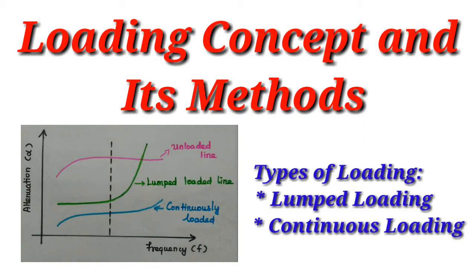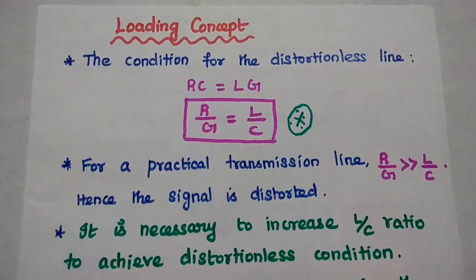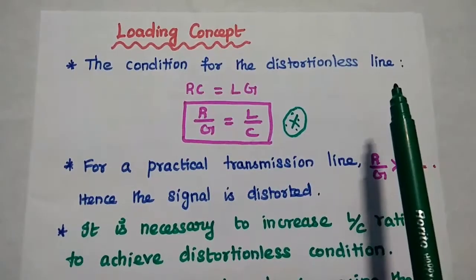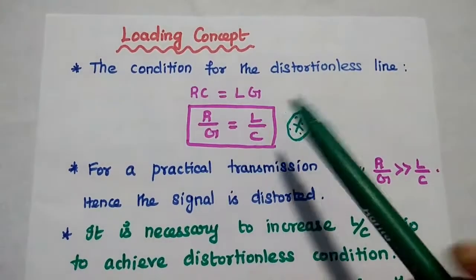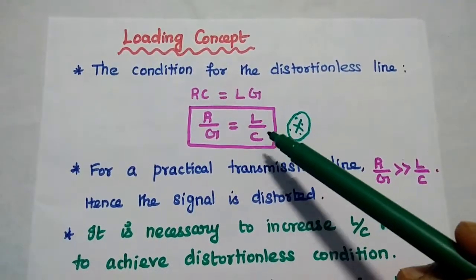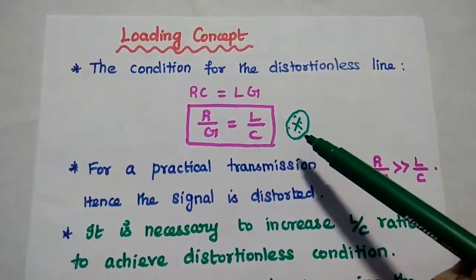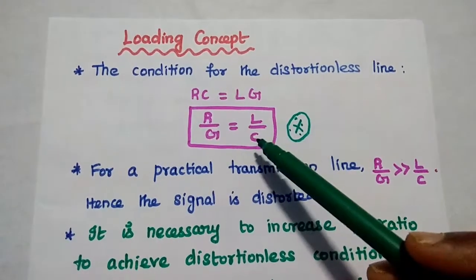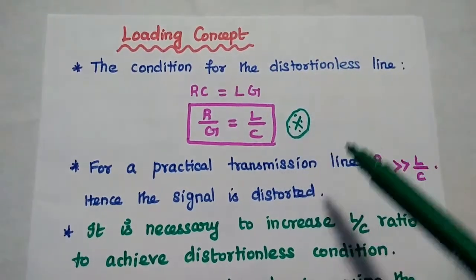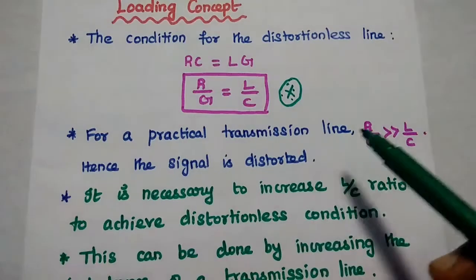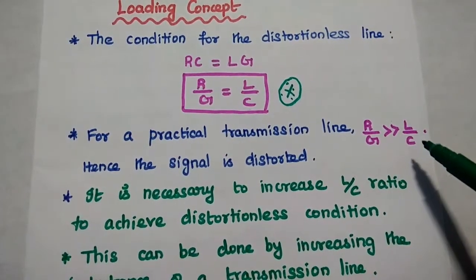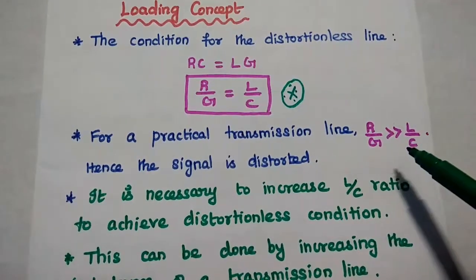We are going to discuss loading of lines and its types in detail. The condition for a distortionless line is RC equal to LG. From this we get the ratio R by G equal to L by C. This is a very important condition. Whichever line satisfies this condition is said to be a distortionless line. But for a practical transmission line, the R by G ratio is far greater than the L by C ratio, and hence the signal is distorted.